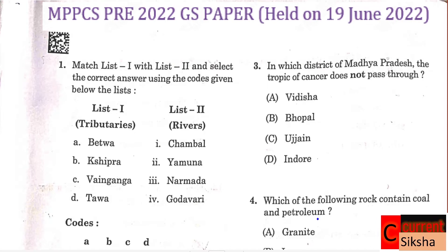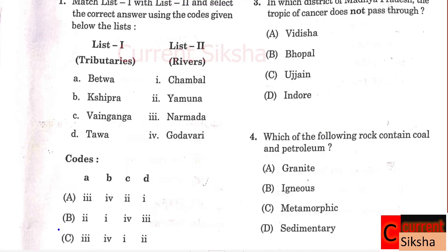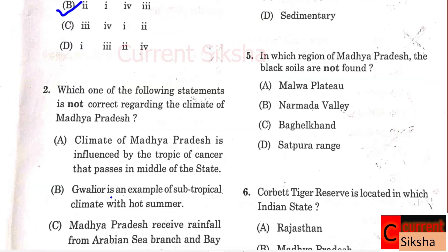Hello and welcome to my YouTube channel. Today I am going to discuss MPPSC PRE 2022 GS paper, which was held on 19th June 2022. Starting with question number one: Match List 1 with List 2 - tributaries. Correct option is B. Betwa is a tributary of Yamuna, Shivra is a tributary of Chambal, Banganga is a tributary of Godavari, and Tawa is a tributary of Narmada.